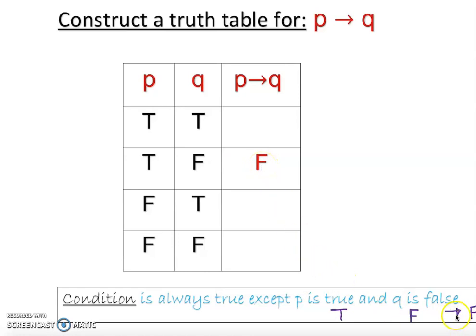The rest of them are going to be true. That is the condition. Let me rewrite that: true true is obviously true, false true is obviously true, and false false is also true.